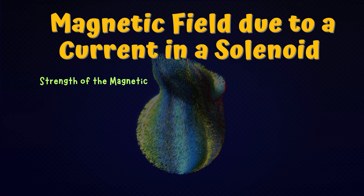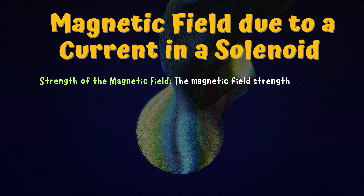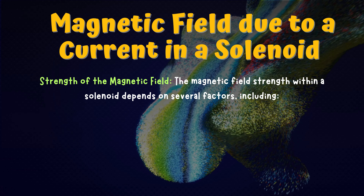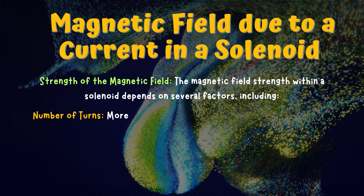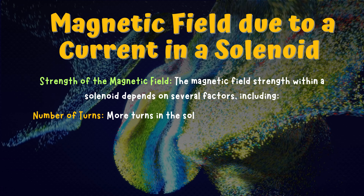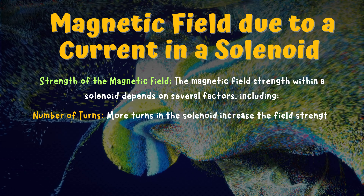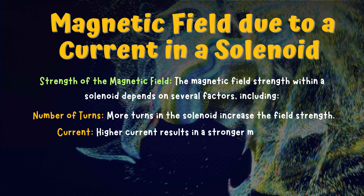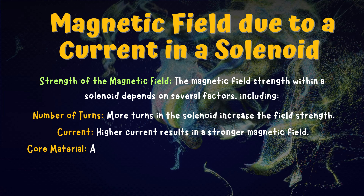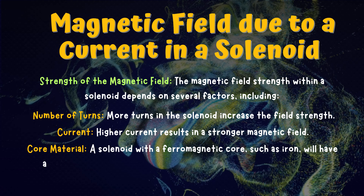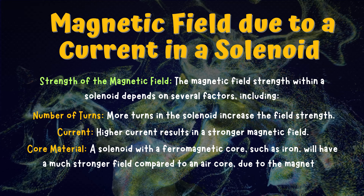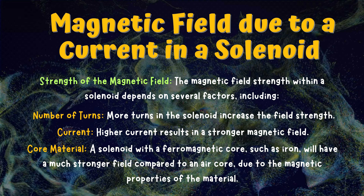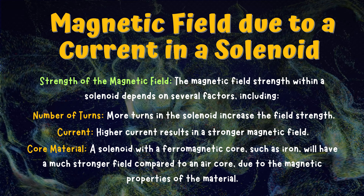Strength of the magnetic field. The magnetic field strength within a solenoid depends on several factors, including: number of turns — more turns in the solenoid increase the field strength; current — higher current results in a stronger magnetic field; and core material — a solenoid with a ferromagnetic core, such as iron, will have a much stronger field compared to an air core, due to the magnetic properties of the material.